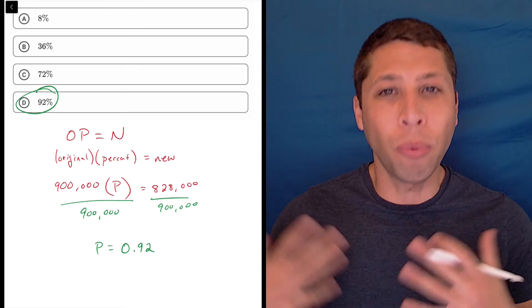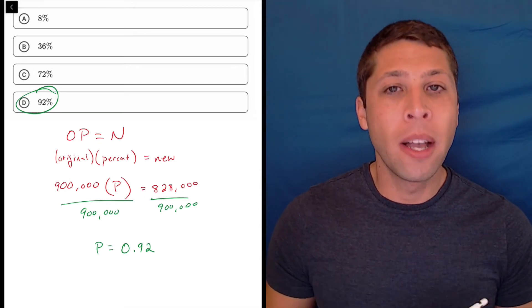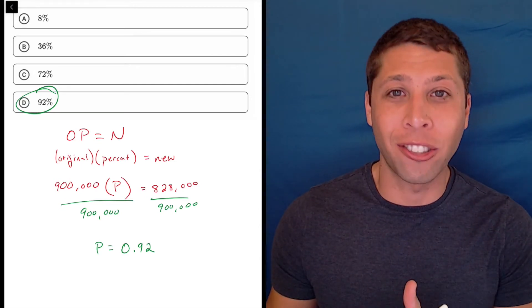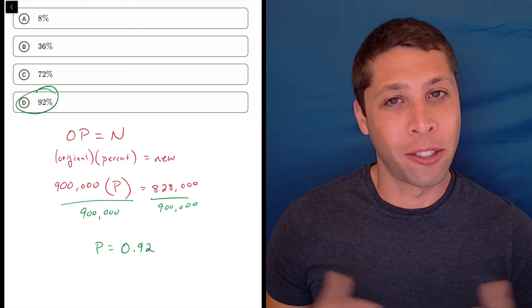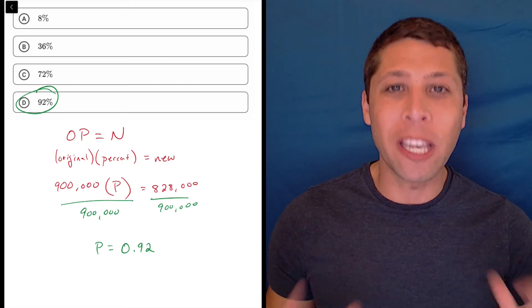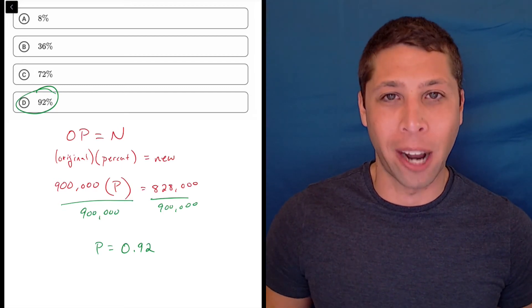but the SAT is really good at twisting percentages up, so I like to have some good habits down for the easy questions so that when things get weird, I'm prepared for when it's hard. So the open formula is designed to keep you organized, so I recommend trying to get that into your process.